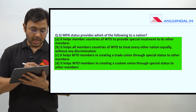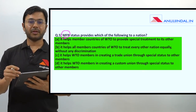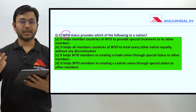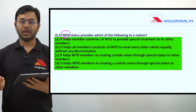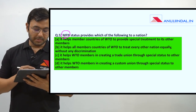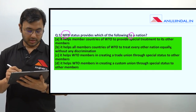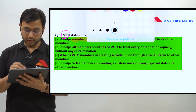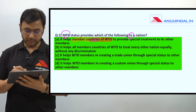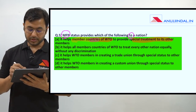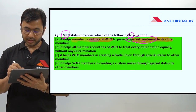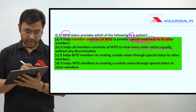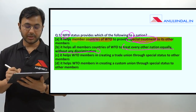Let us come to the last question for today. MFN status - what is the full form of MFN? Please provide it in the comment section below so that I know whether you have read about the ESI section or not. MFN status provides which of the following to a nation. Number one, it helps member countries of WTO to provide special treatment to its other members - the keyword here is special treatment. Number two, it helps all member countries of WTO to treat every other nation equally without any discrimination.